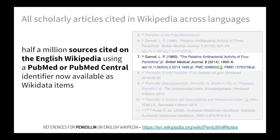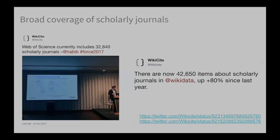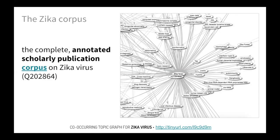The core use case was creating a database for Wikipedia, so we currently have all scholarly articles cited across languages in Wikidata, which are queryable and analyzable in the system. We have broad coverage of scholarly journals — about 42,000 items and counting in Wikidata. We have a growing citation graph: right now about 90 million citation links extracted from the literature, represented using statements. We also have curated corpora of bibliographic literature — this is an example of what we think is a complete annotated scholarly publication corpus on Zika virus, allowing you to explore topics, authors, and institutions contributing to Zika virus research on a basically daily basis.